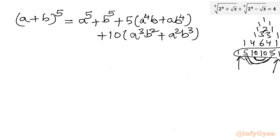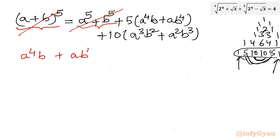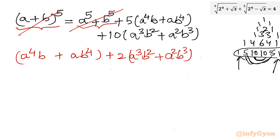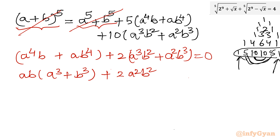Since a⁵ plus b⁵ equals (a+b)⁵, the a⁵ and b⁵ terms cancel, leaving one side equal to 0. Grouping by coefficients — 5 and 5 together, 10 and 10 together — and dividing through by 5, we get: ab(a³ + b³) + 2a²b²(a + b) = 0. Taking ab common from the first group and 2a²b² from the second, we factor out and note that a plus b appears.